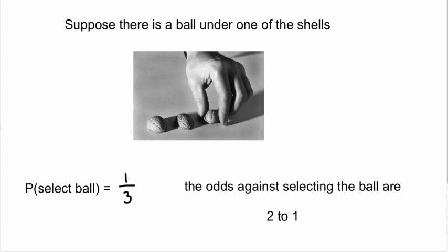Let's look at a familiar example for probability. Suppose there's a ball under one of these three shells. What's the probability of selecting the ball? Well, it's one over three — there are three possibilities and one has the ball, so the probability is one out of three. This is the same as the odds against selecting the ball being two to one: two ways you don't select, and one way you do.